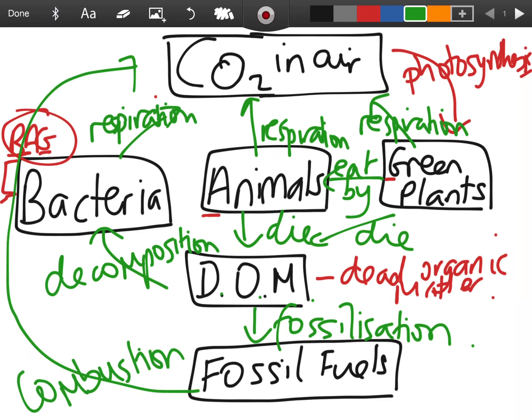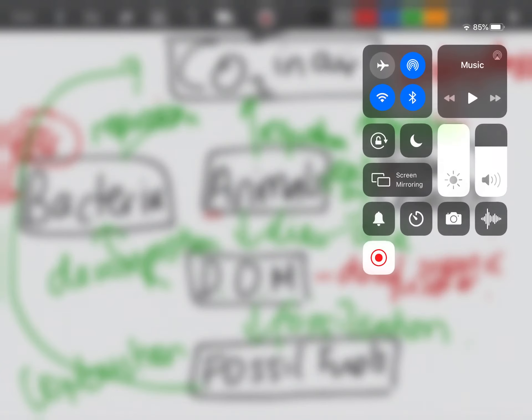The last arrow to add is combustion — burning of fossil fuels such as coal, oil, and gas returns carbon dioxide to the air. That's the carbon cycle we need to learn. If anyone has any questions, ask when you're coming.